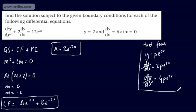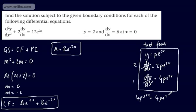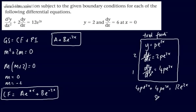We can now find the particular integral. If you're not familiar with this, please check the previous videos. Substituting in, we get 4pe^(2x) + 2(2pe^(2x)) = 12e^(2x), which gives 4pe^(2x) + 4pe^(2x) = 12e^(2x). That leaves us 8p = 12, so p = 12/8 = 3/2. Therefore the particular integral is (3/2)e^(2x).